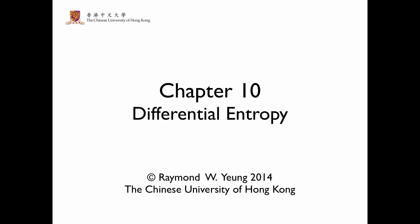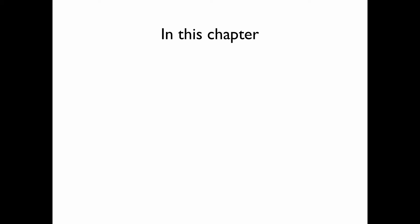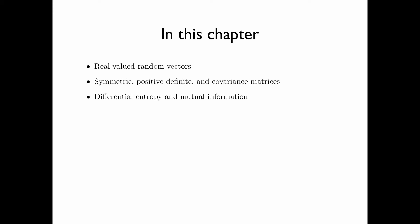Chapter 10: Differential Entropy. In this course, all the random variables discussed so far are discrete random variables. In this chapter, we will discuss real valued random variables, in particular random vectors. We will discuss in depth the properties of symmetric matrices, positive definite matrices, and covariance matrices.